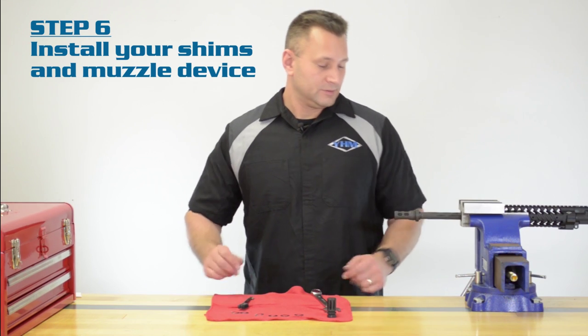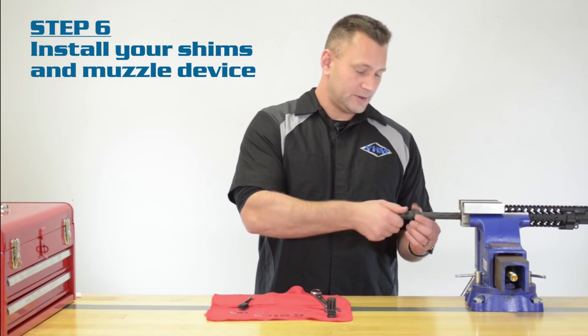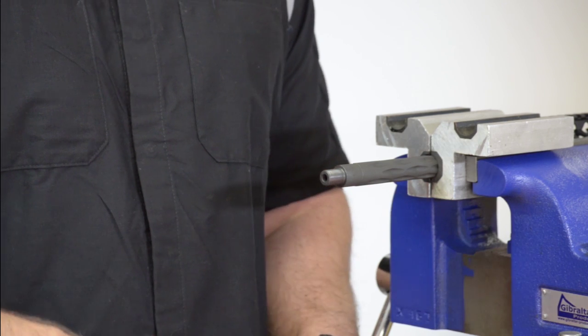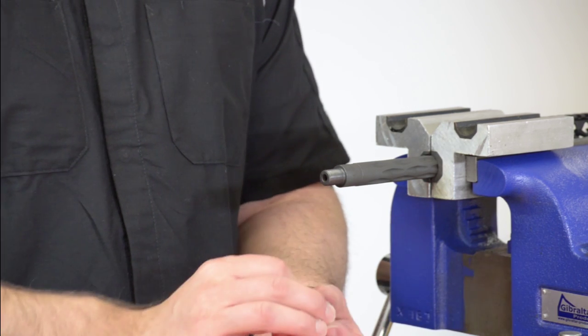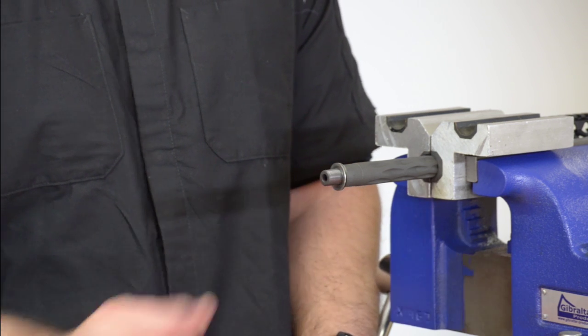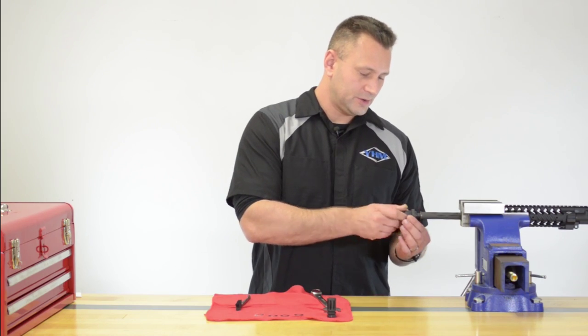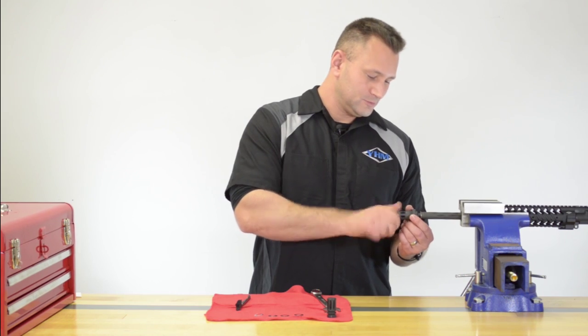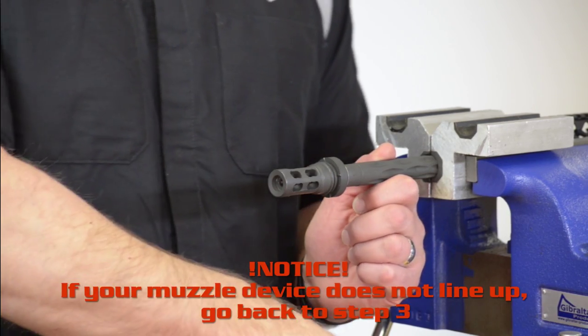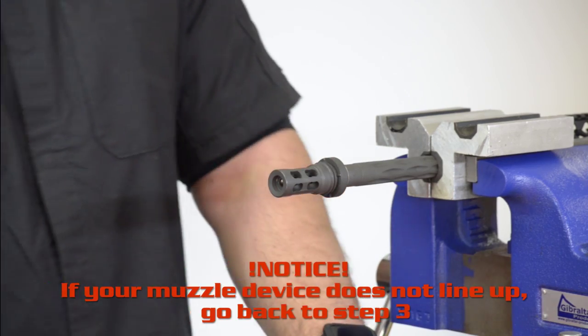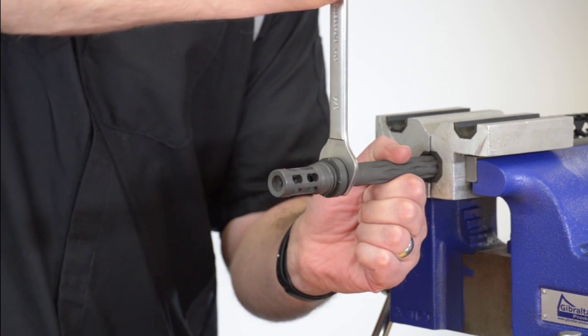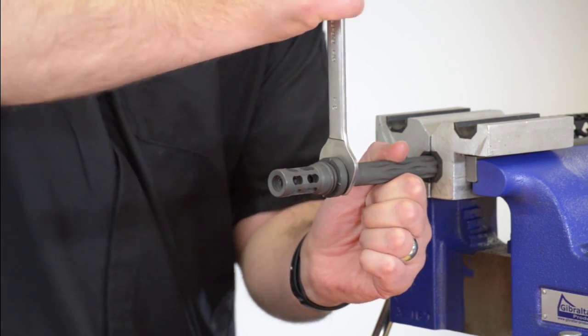Step six, remove your brake and install your shims. Reattach your QD mount. Hand tight until it stops. Using the wrench, tighten the muzzle brake to between twenty and thirty foot-pounds.